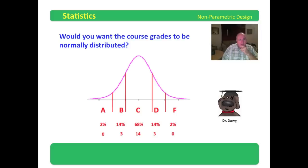In a class of 20, that means there will be no A's, no F's, 3 B's, 3 D's, and 14 C's. How do you feel about that? Do you really want everything to be normally distributed?